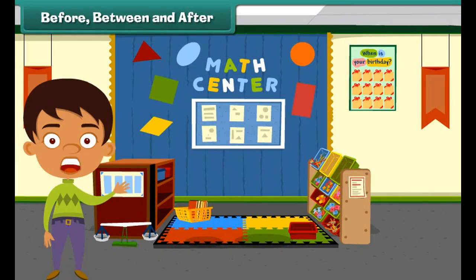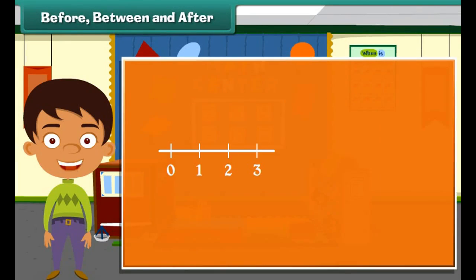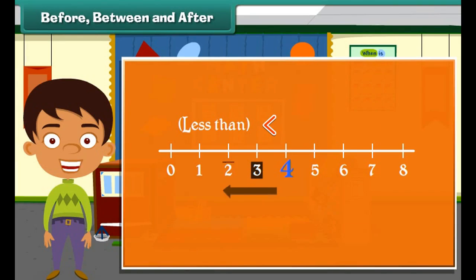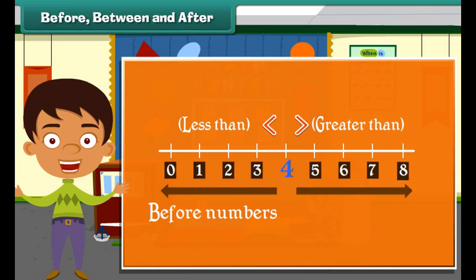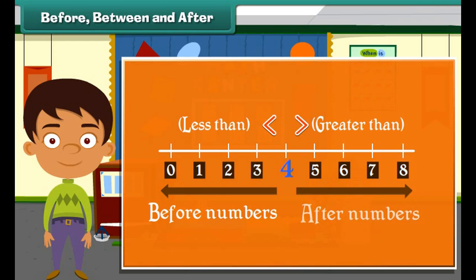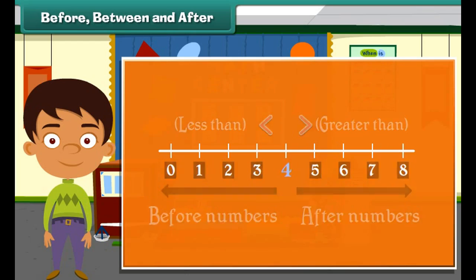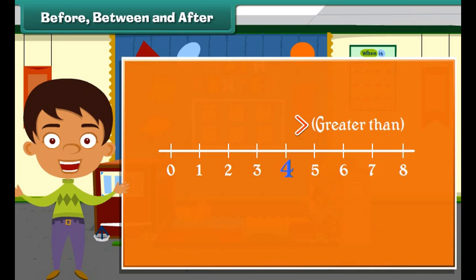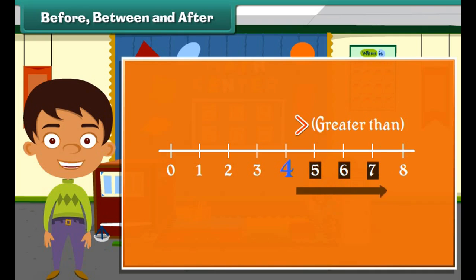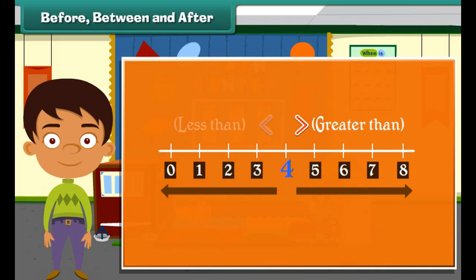Numbers that are less than a given number appear before it. Numbers that are greater than a given number appear after it. A number that falls between two numbers is greater than the number to its left and smaller than the number to its right.